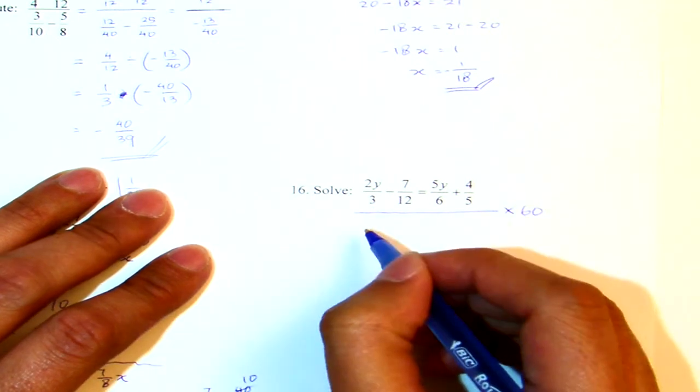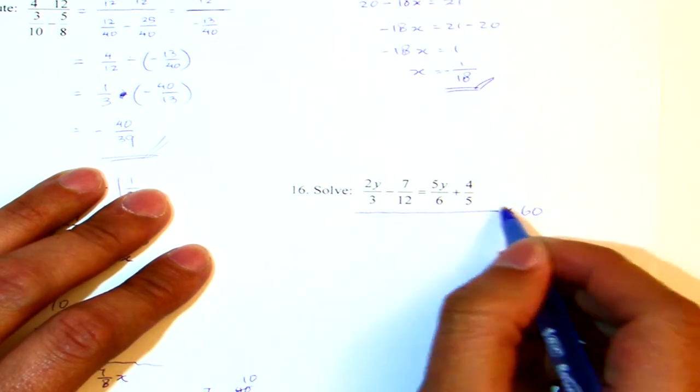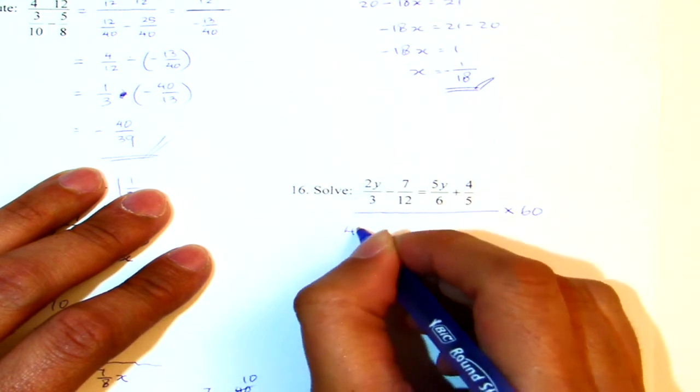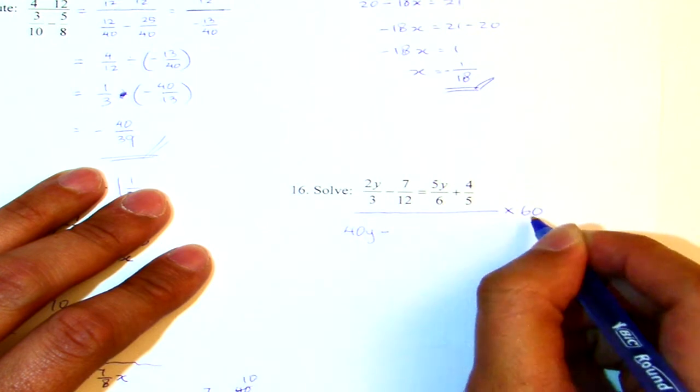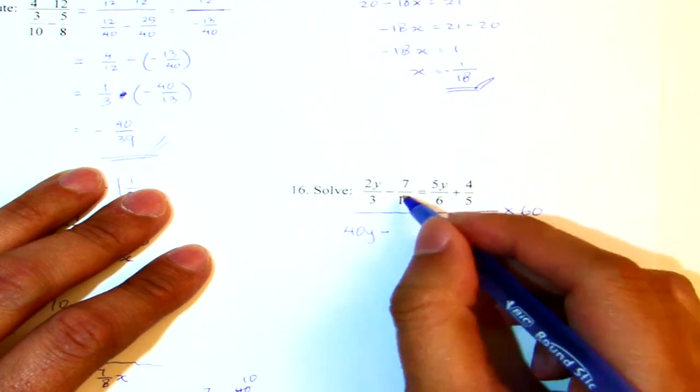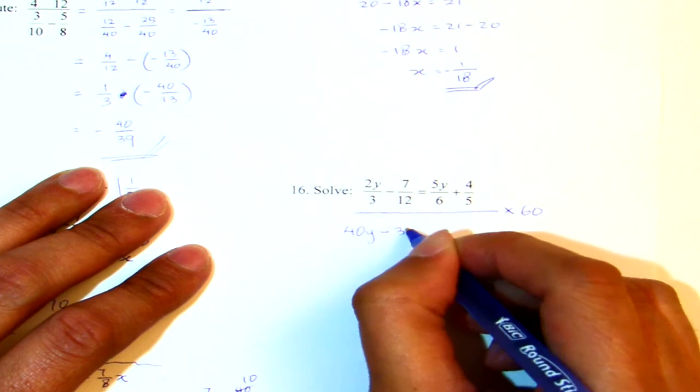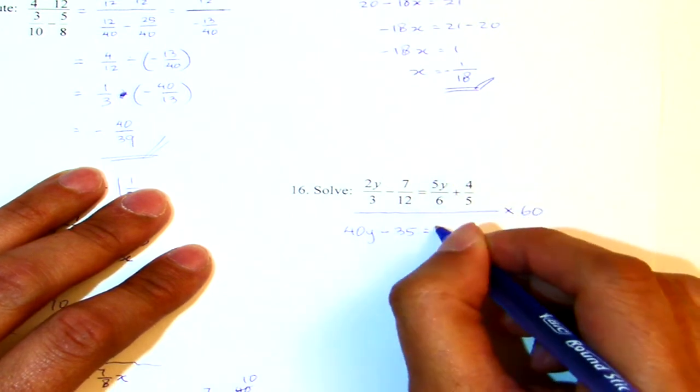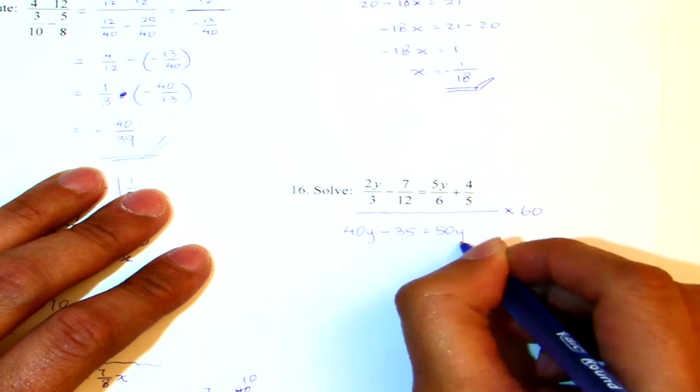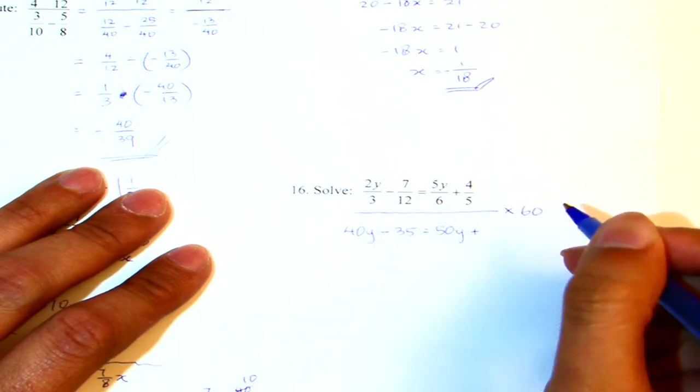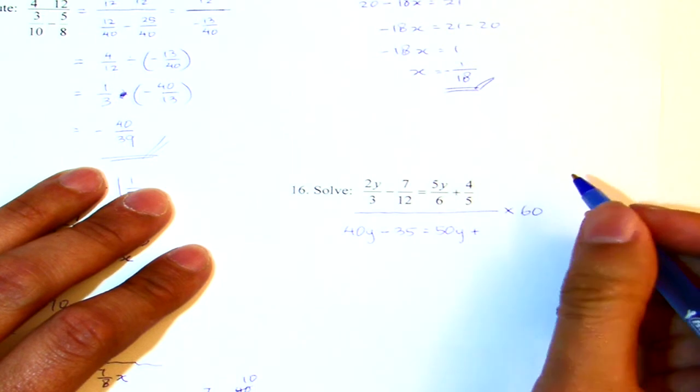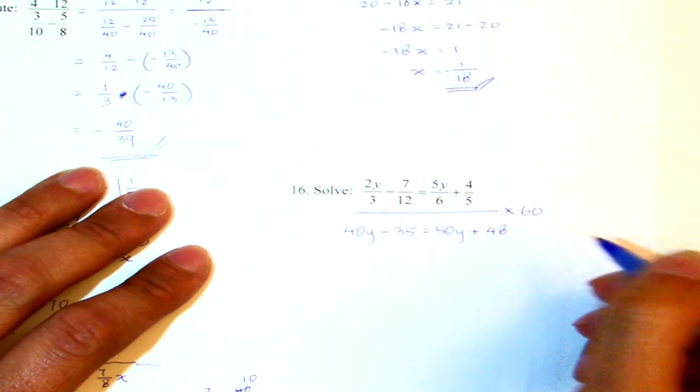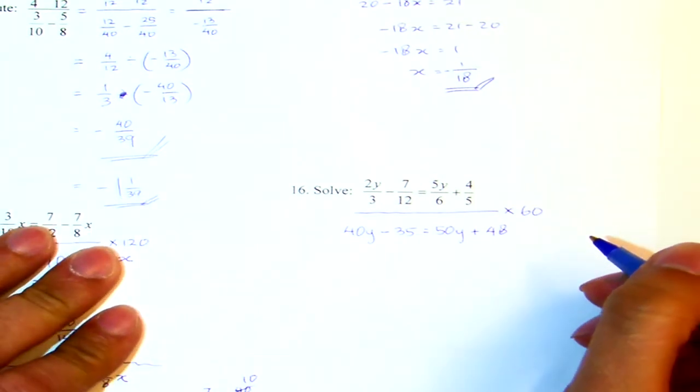The first term, the first fraction will be 60 divided by 3 is 20 times 2y is 40y minus 60 divided by 12 is 5 times 7 is 35 equals to 60 divided by 6 is 10 times 5y is 50y. Plus 60 divided by 5 is 10 times 4. That's 48.